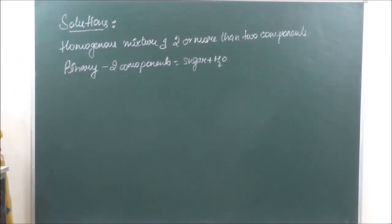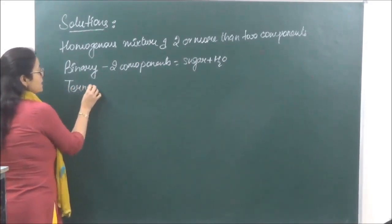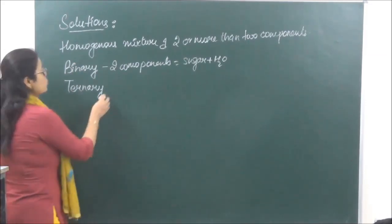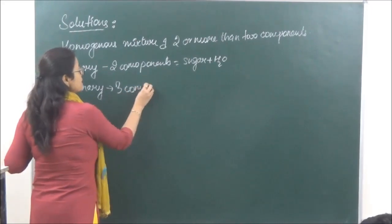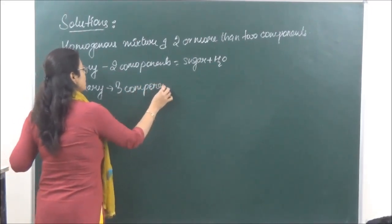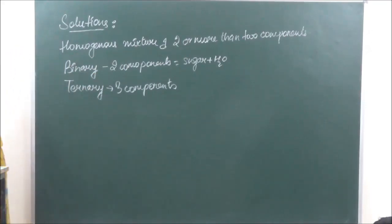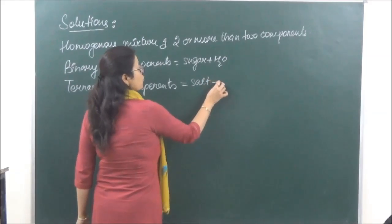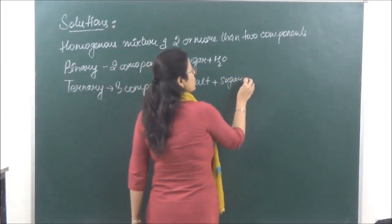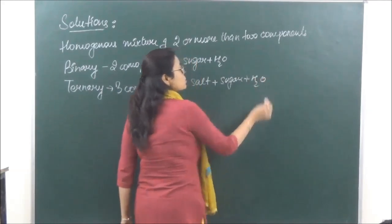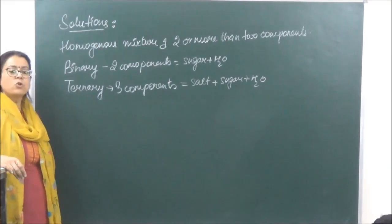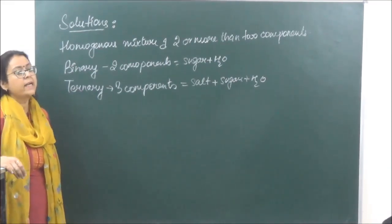Ternary solution ka matlab hua - it has three components. Jaise aapne isi ke andar salt bhi daal diya - toh paas salt ho gaya, sugar ho gaya, aur water ho gaya. So this is known as a ternary solution. Usi tarah se agar chaar components ho to usko hum quaternary solution kehte hain, and so on.